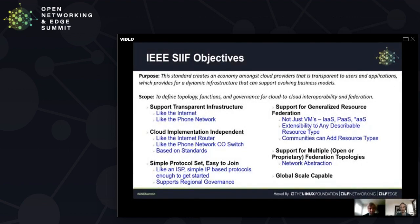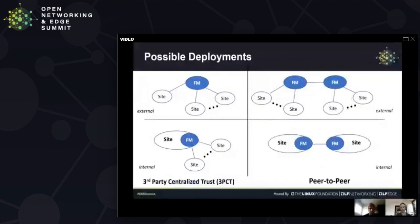The objectives of the IEEE standards for intercloud interoperability and federation working group—the purpose was to create an economy amongst cloud providers which is transparent to users' applications and provides for a dynamic infrastructure that can support evolving business needs. In essence, this group would like to create cloud federation standards which support a transparent infrastructure, much like the internet and phone network. It would need to be cloud implementation independent, like internet routers, like the phone network. It would have to be a simple protocol set and easy to join. There should be support for generalized resource federation, not just virtual machines, but all services up and down the stack, and also support for multiple federation topologies through network abstraction, and finally, globally scale capable.